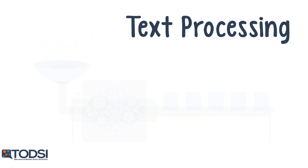For text processing tasks like sentiment analysis, parsing, and named entity recognition, use a recurrent net or a recursive neural tensor network, which we'll refer to as an RNTN. For any language model that operates on the character level, use a recurrent net.